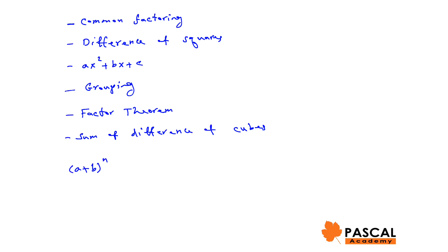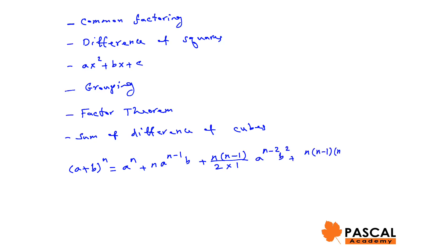Also, the viewer is familiar with expansion using the binomial theorem. (a plus b) to the power of n expands as a^n plus n·a^(n-1)·b plus n(n-1)/2·a^(n-2)·b^2 plus n(n-1)(n-2)/(3·2·1)·a^(n-3)·b^3 plus similar terms until b to the power of n.